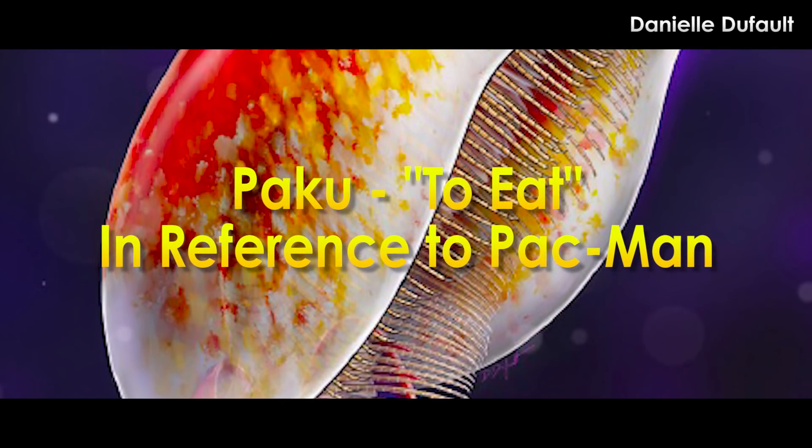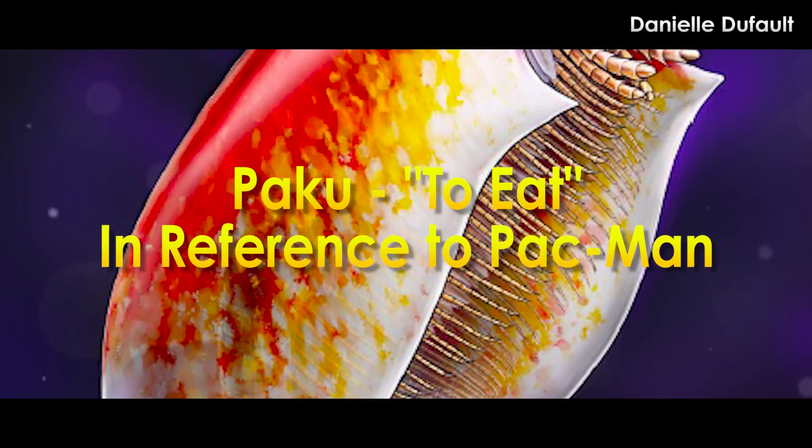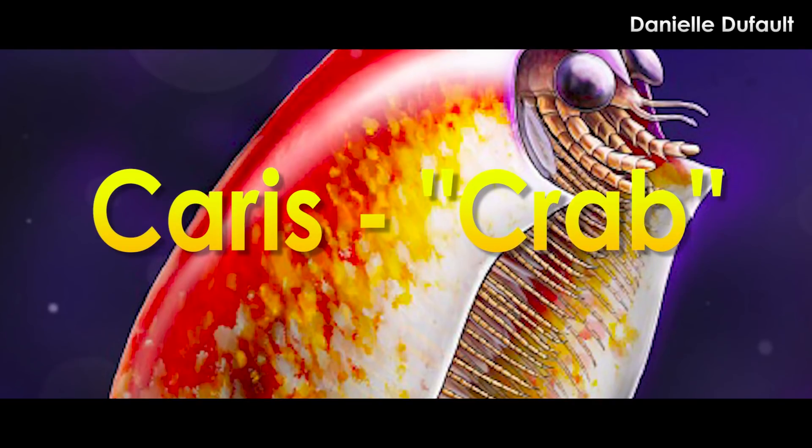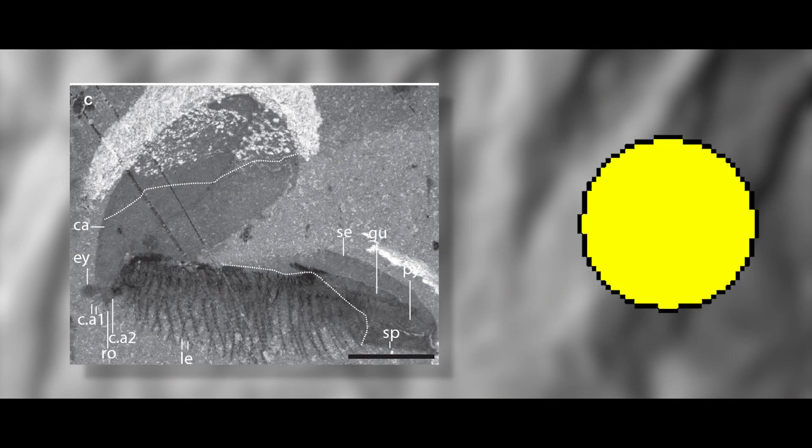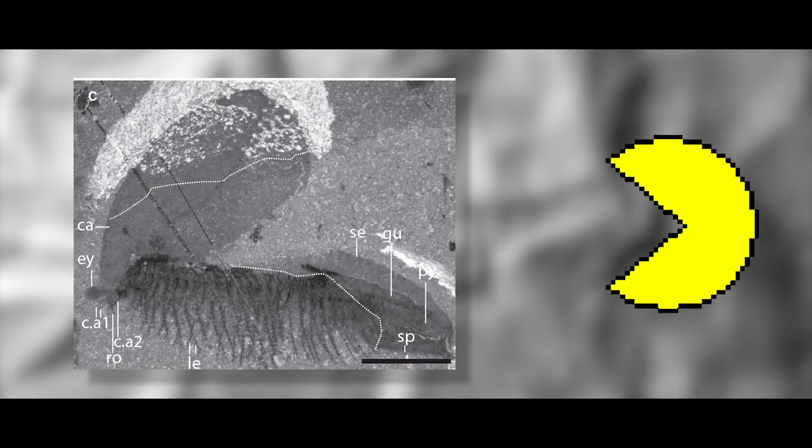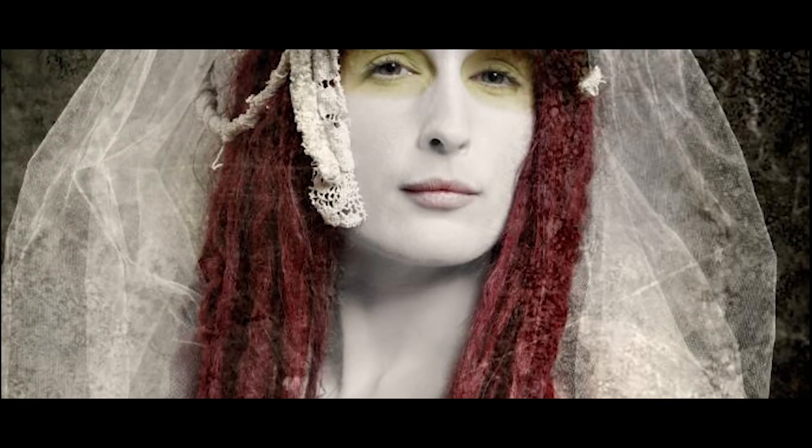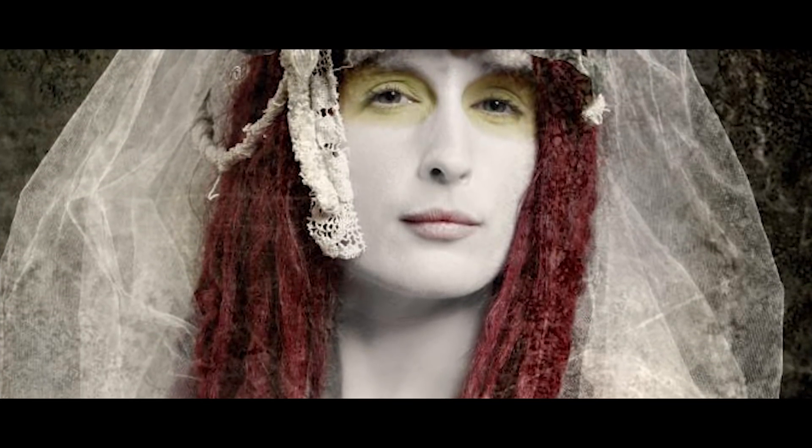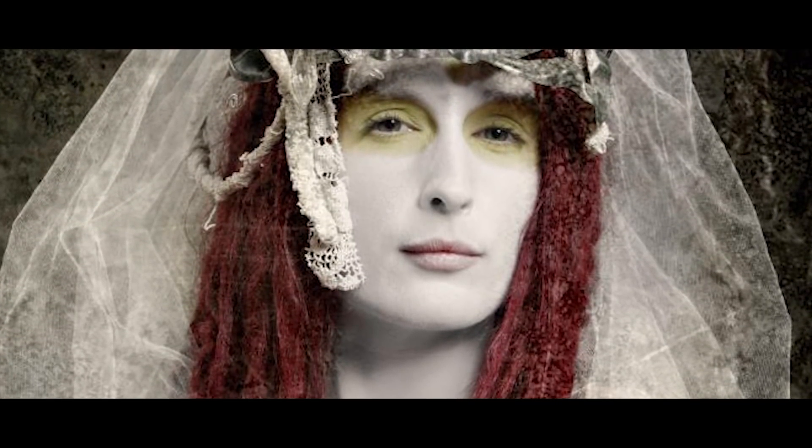Pacu is the Japanese word for eating and is what Pac-Man's name was derived from, and caris means crab. They named it after Pac-Man because the shells kinda look like Pac-Man. The species name, apetus, refers to Apate, the Greek goddess of deception.